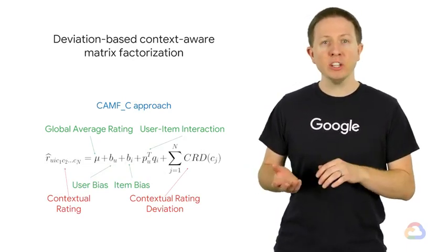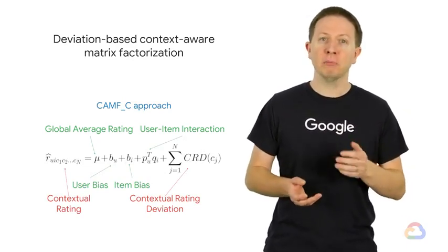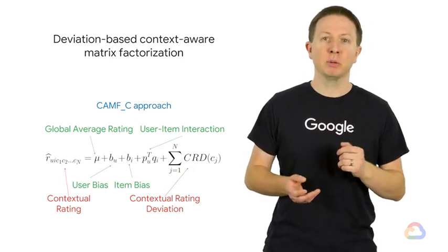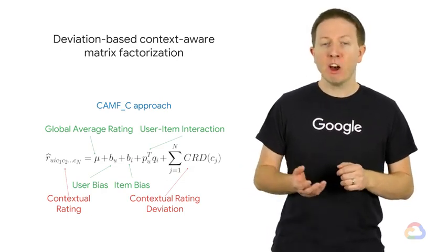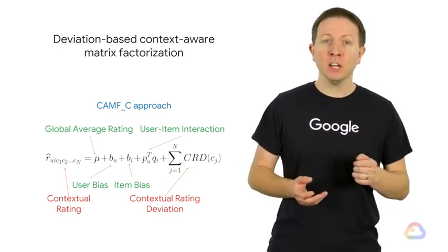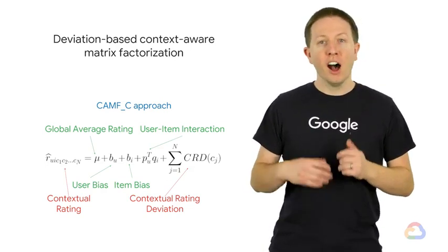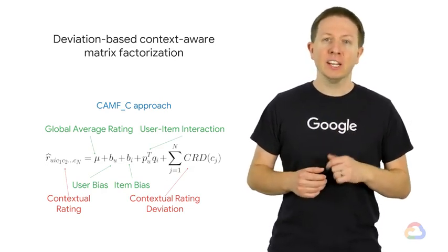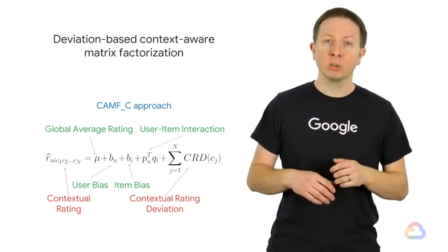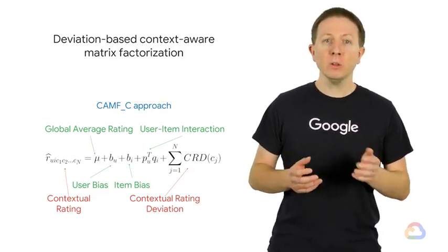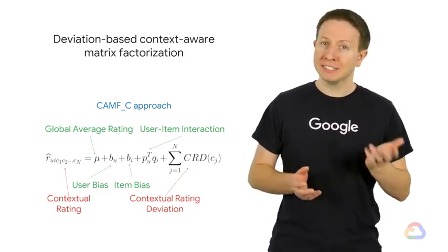Instead of using the previous equation, we can use the context-aware matrix factorization context approach (CAMF_CU). We can see that almost everything is the same, except for two terms. On the right-hand side, we have added the contextual rating deviations summed across contexts. This gives us contextual, multi-dimensional ratings on the left-hand side.